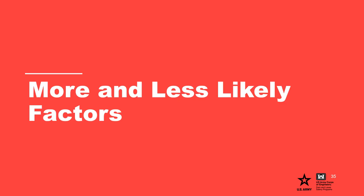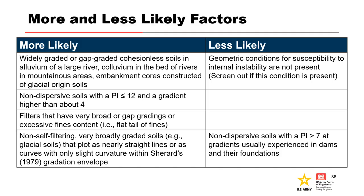This table can be used to help assess the likelihood of a soil being susceptible to internal instability — in other words, it addresses the geometric conditions only. This table can be used as a starting point, but the risk team must develop project-specific more likely and less likely factors to guide subjective probability estimation.